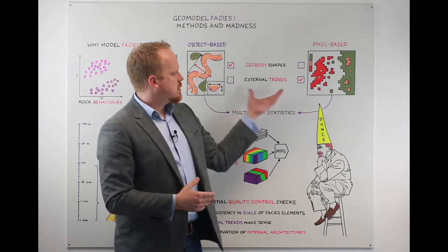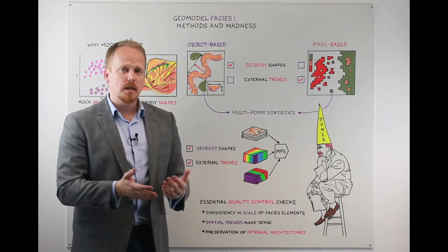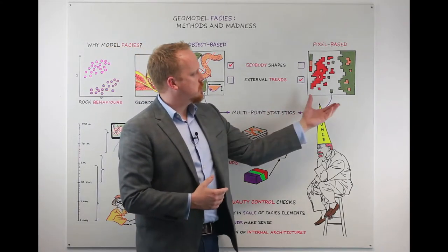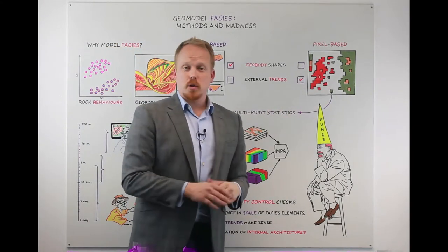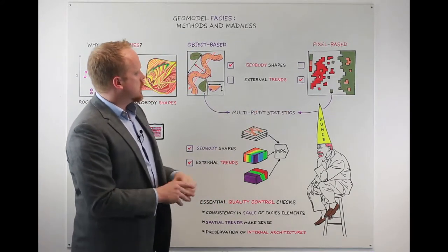The pixel-based methods are very good at incorporating external trends. So say seismic data or map-based behaviours that you want to instill upon your model that can help you get those spatial relationships done very well. Very good at honouring lots of different probabilities.